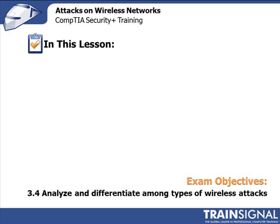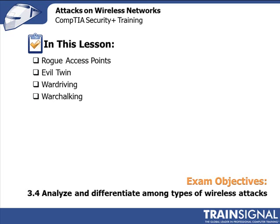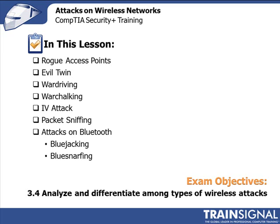We'll start by discussing two attacks where the attacker uses their own access point to launch attacks on your network or your users. Those are called Rogue Access Points and Evil Twin Attacks. Then we will move on to War Driving and War Chalking, two ways for attackers to find and keep track of unsecured networks. Then we will talk about Initialization Vector Attacks, which take advantage of the weaknesses built into older and weaker wireless encryption methods. After that we will revisit packet sniffing. Bluetooth has its attack types too, so we'll talk about Blue Jacking and Blue Snarfing. And last we will discuss Intentional Wireless Interference. The exam objective for this lesson is to analyze and differentiate among types of wireless attacks. Let's get started.